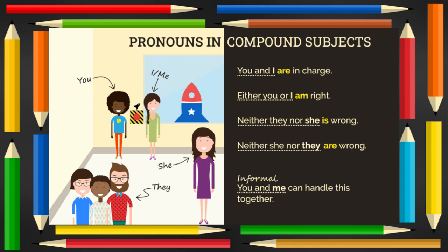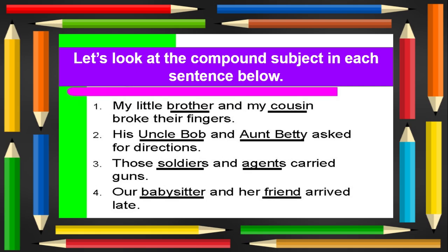Pronouns in compound subjects: 'You and I are in charge.' 'Either you or I am right.' 'Neither they nor she is wrong.' 'Neither she nor they are wrong.' Informal: 'You and me can handle this together.' Let's look at the compound subject in each sentence below. 'My little brother and my cousin broke their fingers.' 'His uncle Bob and aunt Betty asked for directions.' 'Those soldiers and agents carried guns.' 'Our babysitter and her friend arrived late.'